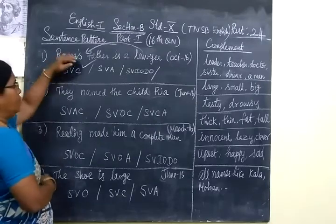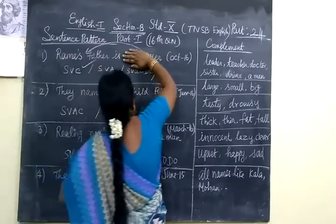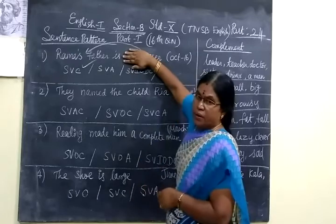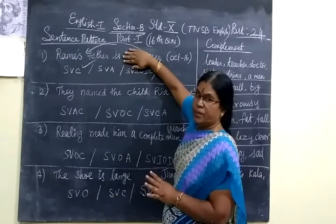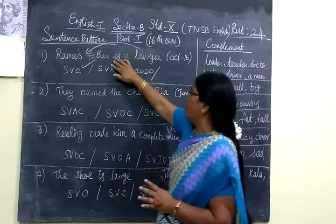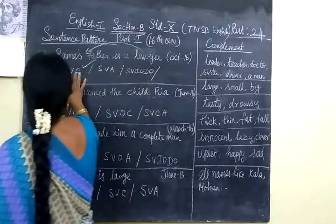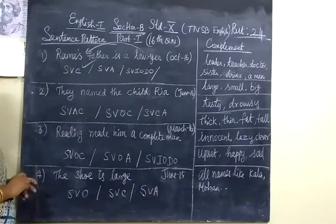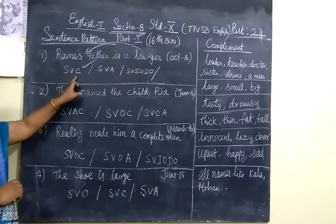You can select SVC. Suppose if you hide and see 'a lawyer,' the sentence is not completed. Rama's father is - what is Rama's father? Rama's father is a lawyer. So you can select SVC, subject-verb-complement.